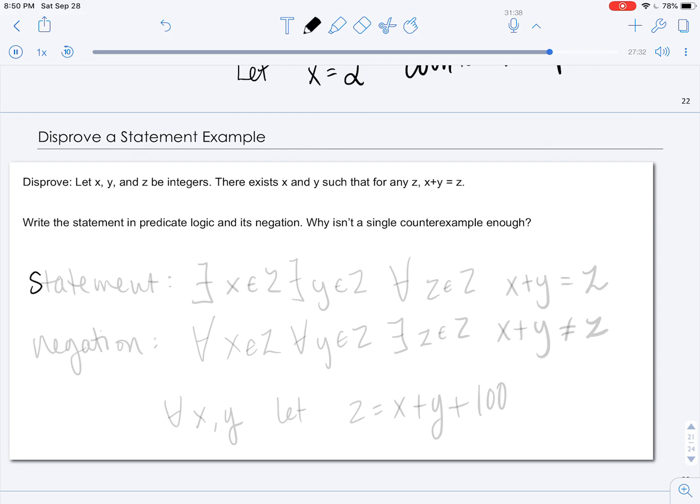So let's write the original statement in predicate logic. There exists x, which is an integer, and there exists y, that's an integer, such that for any z, also an integer, x plus y equals z.